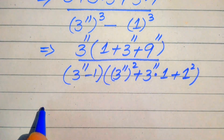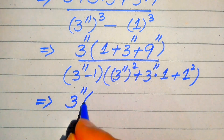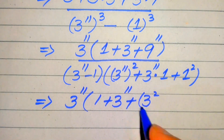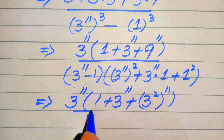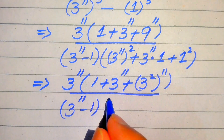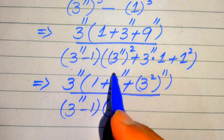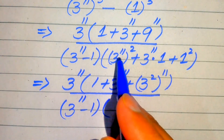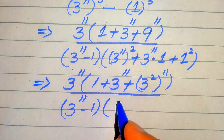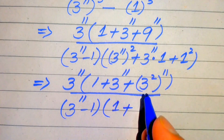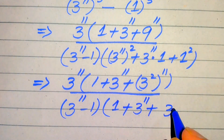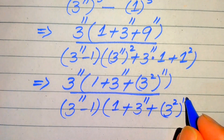We rewrite this expression as 3 to the power of 11 times (1 plus 3 to the power of 11 plus 3 squared whole to the power of 11), divided by (3 to the power of 11 minus 1) times (3 to the power of 11 squared plus 3 to the power of 11 times 1 plus 1 squared). Here we interchange the two exponents where needed, so 3 to the power of 11 squared becomes 3 squared whole to the power of 11.